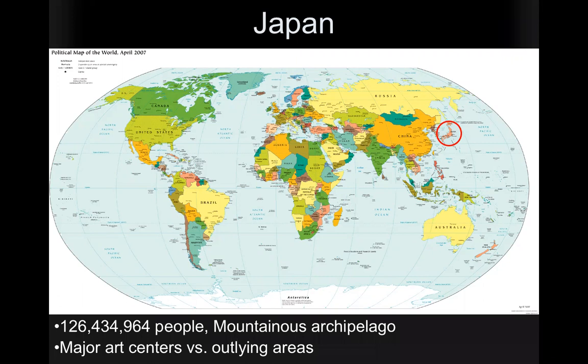I'm showing you this world map and you can see circled over here is Japan, right next to China across the bay. There are about 126,434,964 people — very precise — and the population of Japan is declining because it's an aging population and people are having fewer children.